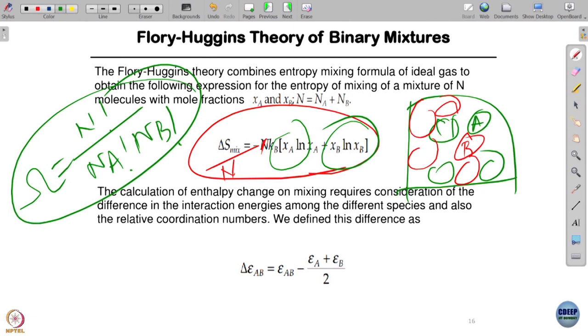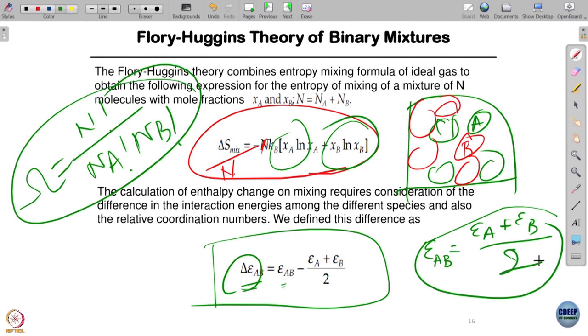Now comes something extremely important. We need something to say A and B are different from each other. That quantification is done by the discriminant. I introduce a term delta epsilon AB in terms of epsilon AA, epsilon BB. If epsilon AB equals (epsilon AA + epsilon BB)/2, what is this called? This is Berthelot rule.